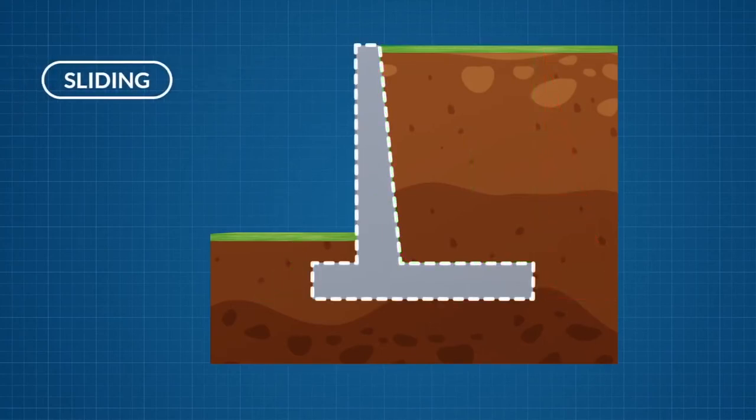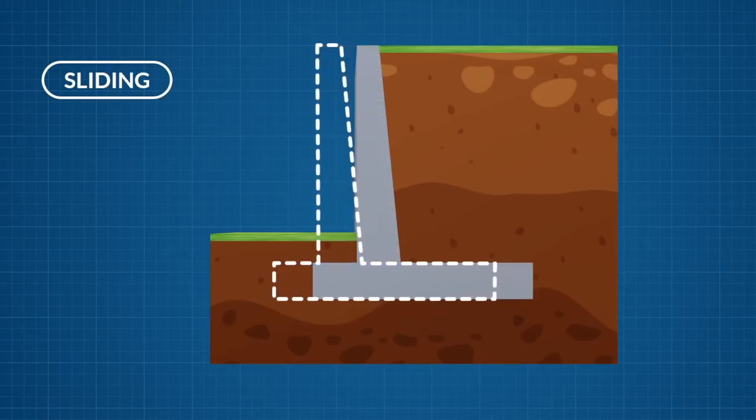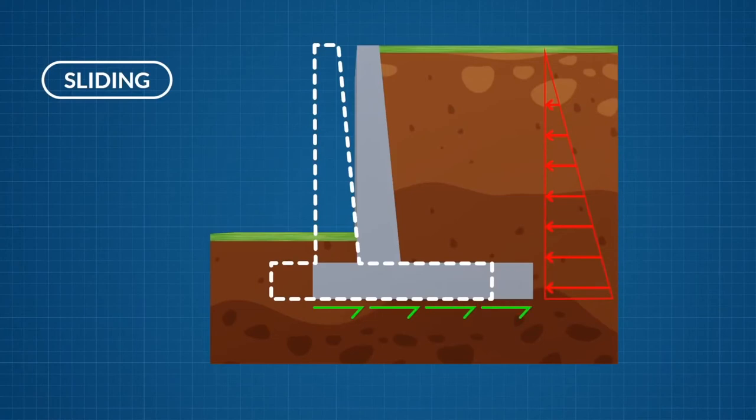The second type of failure is by sliding. The active earth pressure applied to the wall acts as a destabilizing force sliding the wall forwards. The stabilizing force is provided by the friction between the base slab and the soil below.